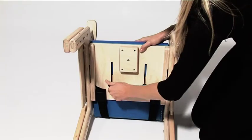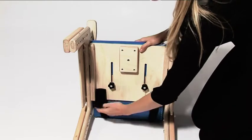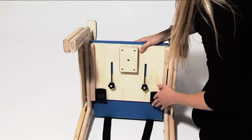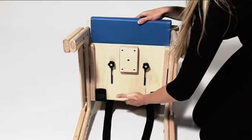To adjust the depth of the seat, loosen the hand wheels and remove the straps. Slide the seat to the desired position. Tighten the hand wheels when the seat depth is set to the desired position.